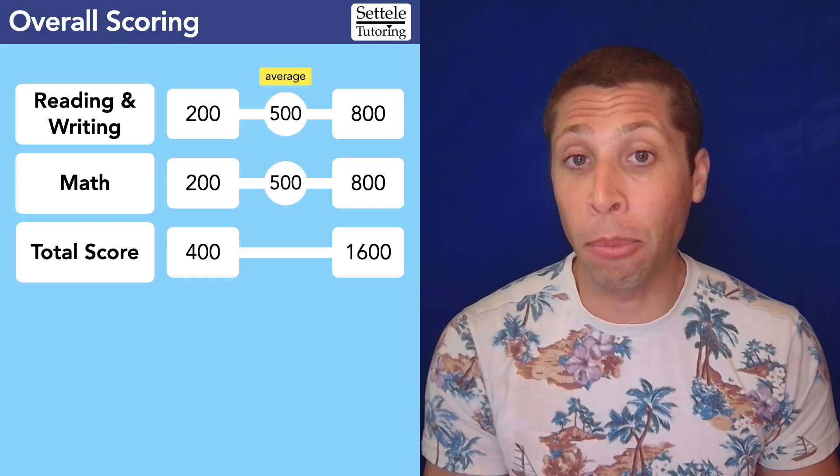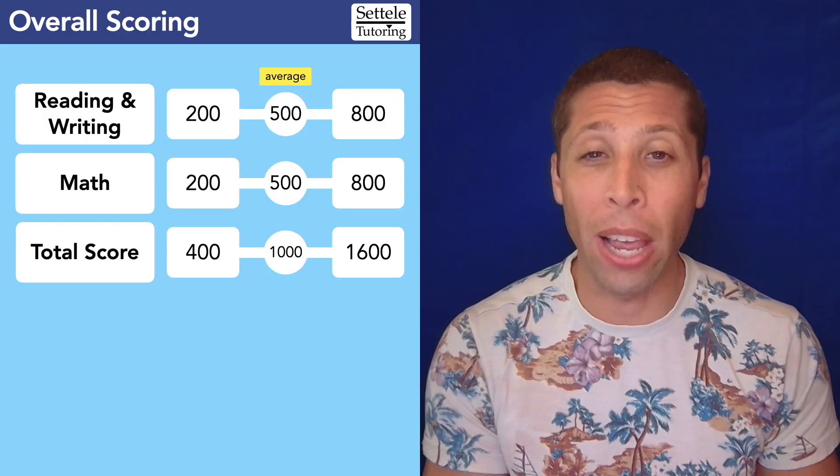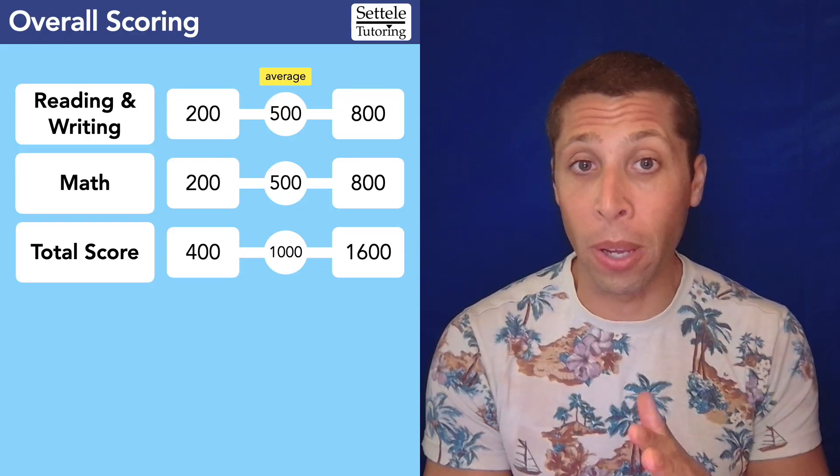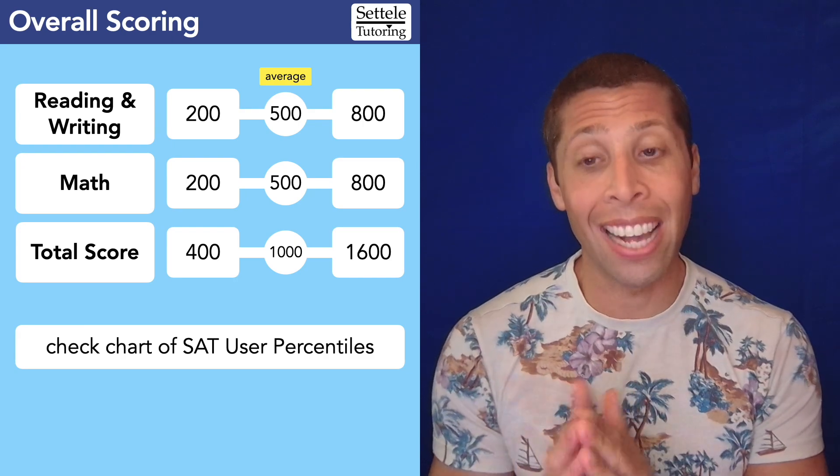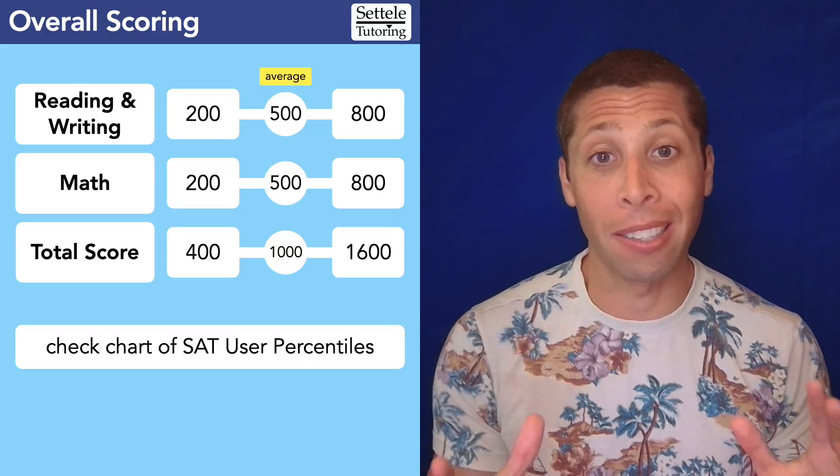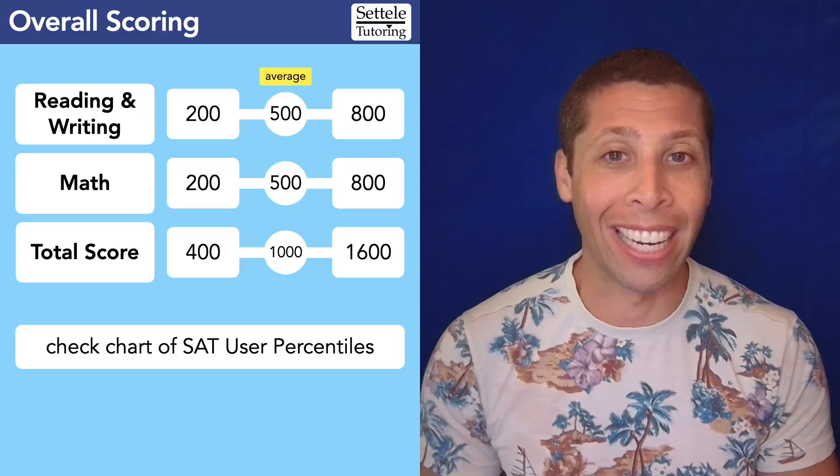To put things in perspective, an average score on any subject is about 500, and so the average on the overall SAT is about 1000. But if you're curious where your scores put you in the grand scheme of things, my advice is to look at one of the charts that has the SAT user percentiles. I will put a link to one of those in the description. That can give you a sense of what percent of people you're doing better than.